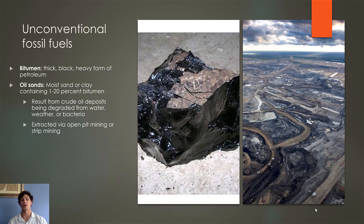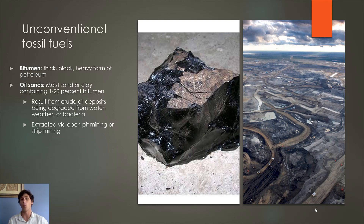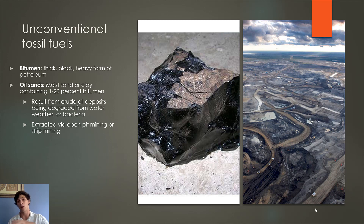The first unconventional fossil fuel is oil sands. Before that, we need to define bitumen — a thick, black, heavy form of petroleum found consistently in oil sands. Oil sands are basically moist sand or clay that contain between 1 and 20% bitumen, resulting from crude oil deposits being degraded by water, weather, or bacteria. These are very common in places like Canada and the northern United States, and are generally extracted via open pit mining or strip mining since they occur right on the surface of the earth.